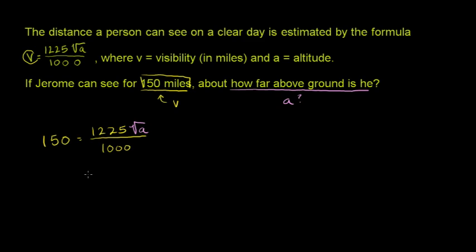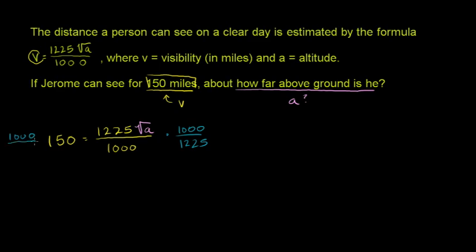Now we can multiply both sides of this equation. We want to isolate this radical so that we can solve for it. What we can do is multiply both sides of this equation times 1000 over 1225. This 1000 cancels with that 1000, that 1225 cancels with that 1225.